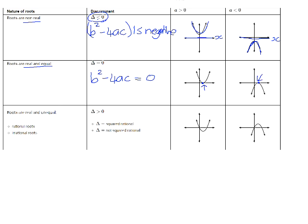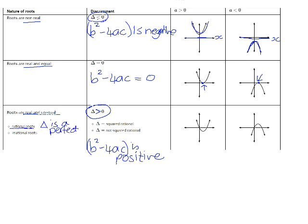The final option is when we get real roots that are unequal. That happens when your b squared minus 4ac is positive — delta is bigger than zero. If delta is bigger than zero, you need to look at the actual value for delta. If your roots are rational, then delta is a perfect square.